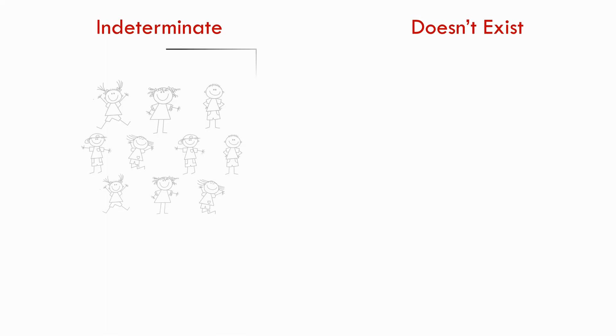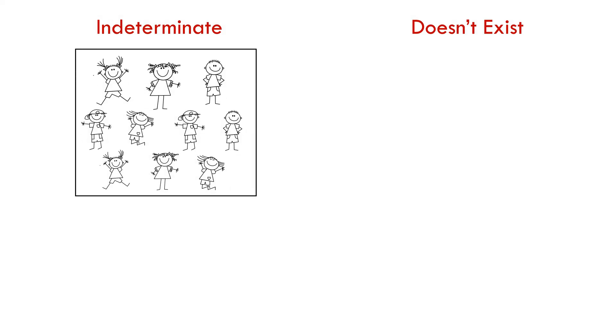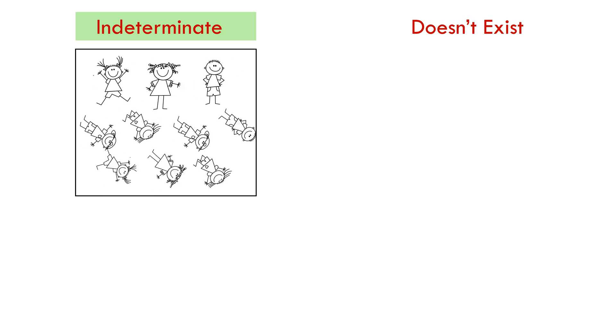Suppose you have 10 cousins and I ask you the question, what is the name of your cousin? You will say the answer is indeterminate because you can't determine which cousin I'm talking about. This or this or this or anyone from these.